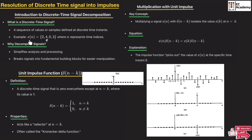For example, if we take x(n) = {2, 4, 0, 3}, the arrow mark is at 4, which means 4 is the value of x(n) at n = 0. So 2 is at n = −1, 0 is at n = 1, and 3 is at n = 2. This is an example of a discrete time signal.